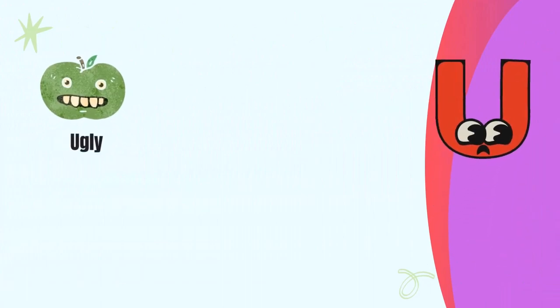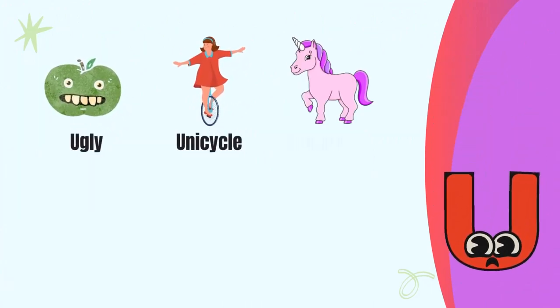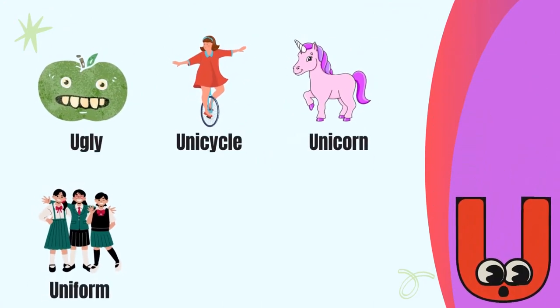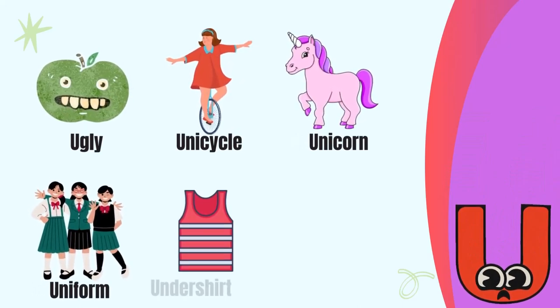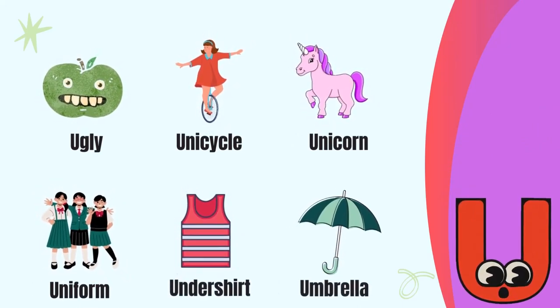Letter U. U for ugly, U for unicycle, U for unicorn, U for uniform, U for undershirt, U for umbrella.